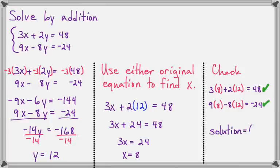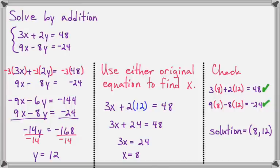This took a minute because we wrote it all down, but if you have a calculator, it's very quick to punch in 3 times 8 plus 2 times 12, hit the equal button, and make sure it shows 48. It only takes a second and will save you a lot of trouble. Look at all the places in this problem where sign mistakes and multiplication mistakes could happen — and the longer a problem is, the more likely that's going to happen. So if it only takes a second to check your work, please do that. I would definitely recommend checking every solution to a system.